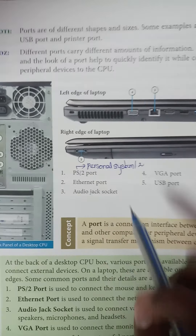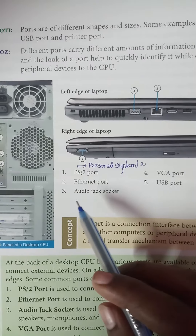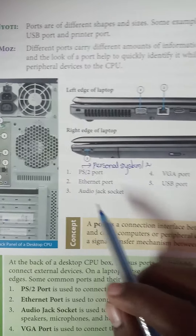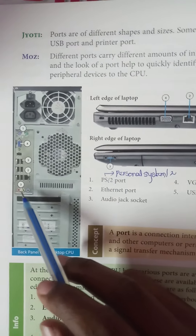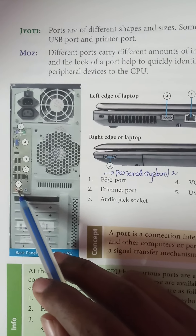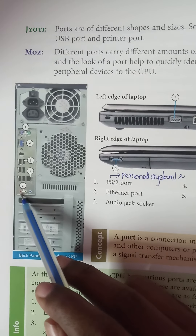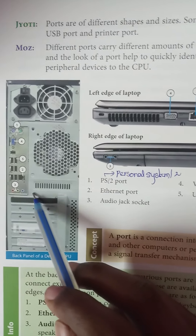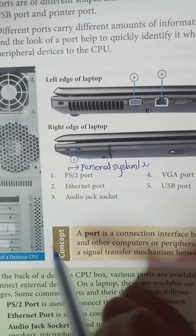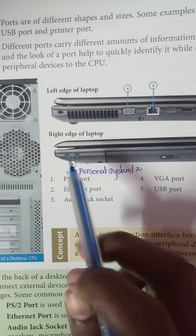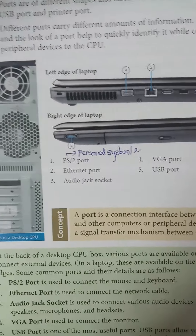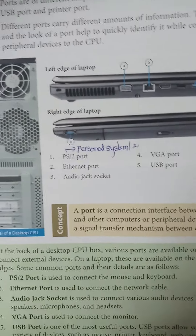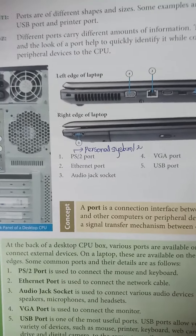The third one is the audio jack socket. You can see here red, green, and blue — on a laptop it is on the right side. The audio jack means you can connect your headset or your speaker.